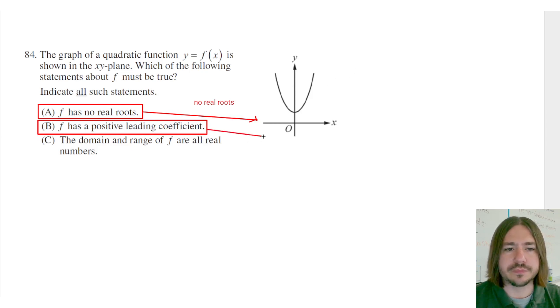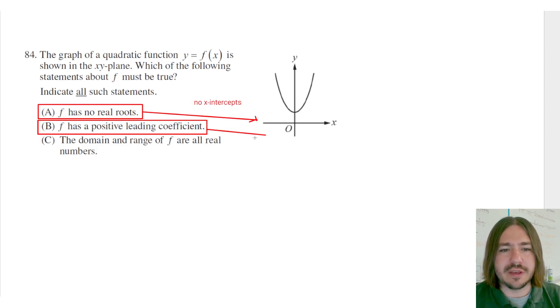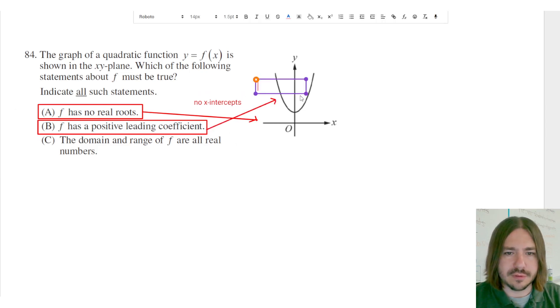So we know this is true because, well, I just noticed I wrote no real roots here. What I meant to say is no X-intercepts. So F has a positive leading coefficient because it opens up. Since the parabola opens up, we know that the leading coefficient must be positive.